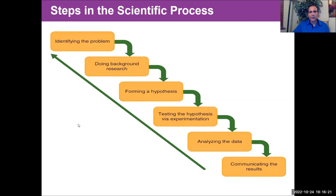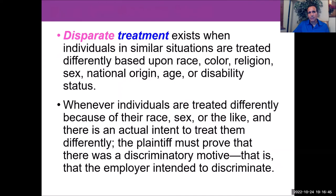The scientific process involves identifying the problem, doing background research, forming a hypothesis, testing the hypothesis with experimentation, analyzing the data, and communicating those results to everyone involved — whether employees, managers, or relevant stakeholders like stockholders. Our goal is disparate treatment and disparate impact analysis.